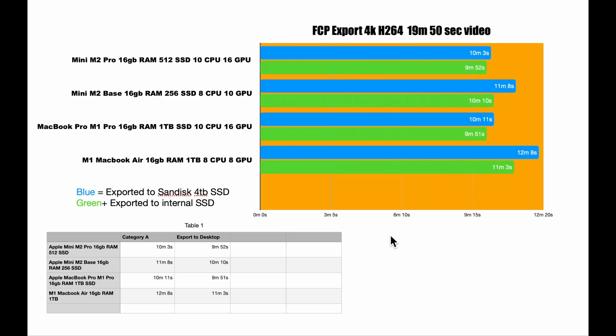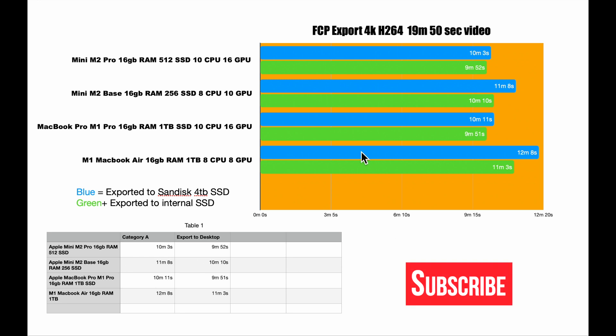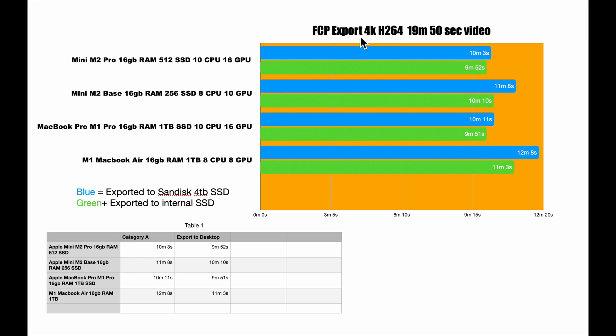Hey guys, welcome back to the channel, Scott's Reviews. Please like and subscribe. This is my overall speed test. What I did here in Final Cut Pro is I exported the last video I just did, which is a 4K H.264 video, about a 19-20 minute video exported.